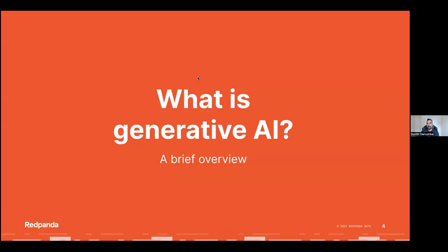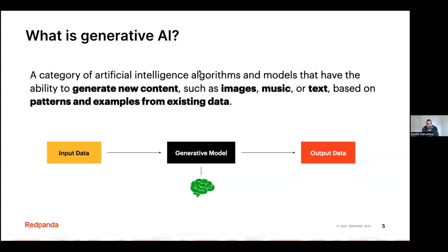Let's discuss what is generative AI. Generative AI is a subfield or subdomain in artificial intelligence which has the ability to generate new content based on user input. The easiest way to understand this is through visual representation. In the heart of generative AI, we have machine learning models — represented by a generative model — connected to a brain representing the dataset that this model has been trained on.